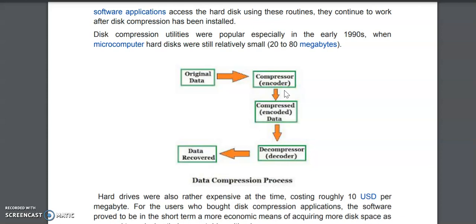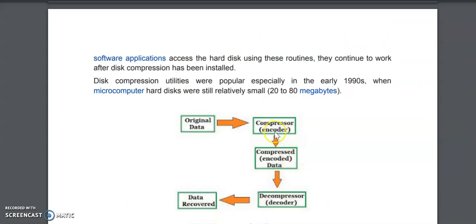Another way is storing data in zero and one format. Repetitions of sequences will be stored as a single sequence, and how many times that repetition occurs will be stored in another file. We will not go into detail of encoding and decoding techniques. Just know that with the help of encoding techniques you can compress the data, it will take less space, and that will be stored on your hard disk.